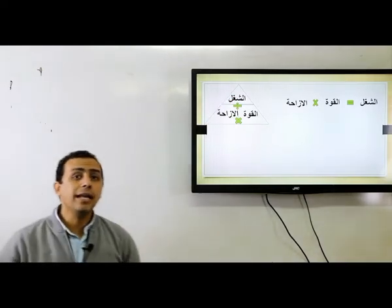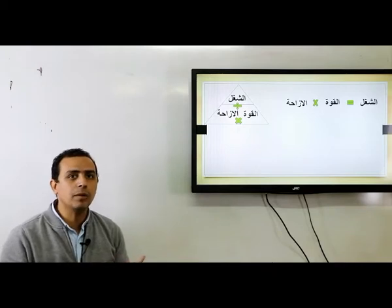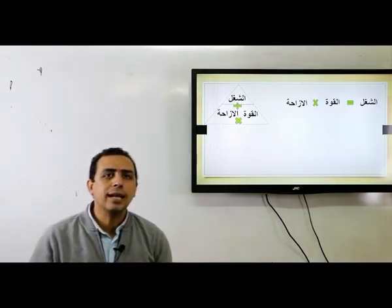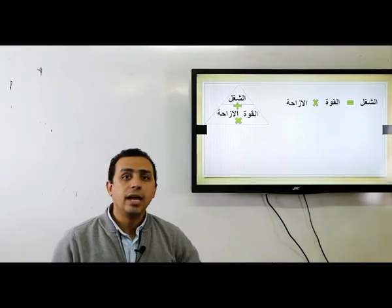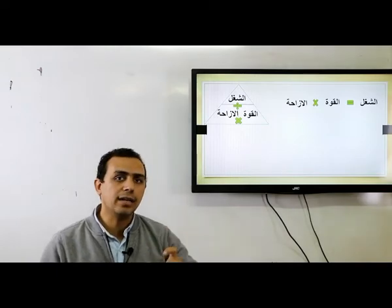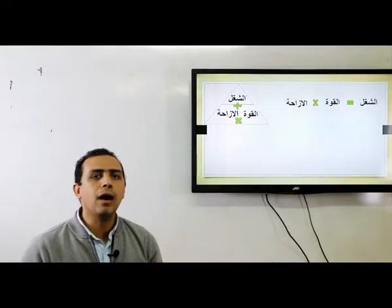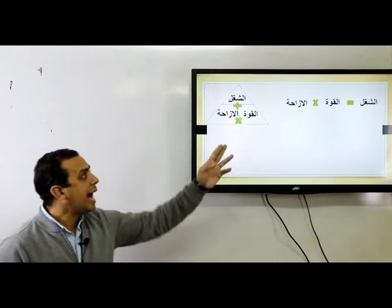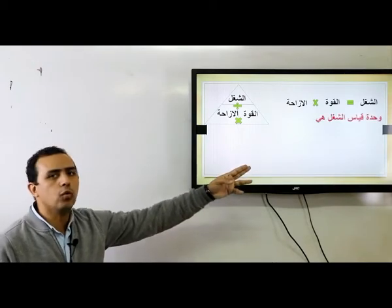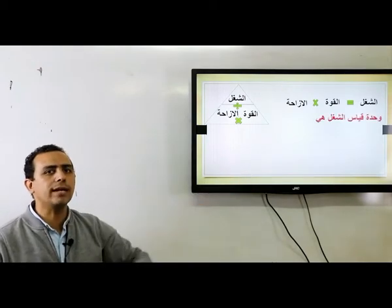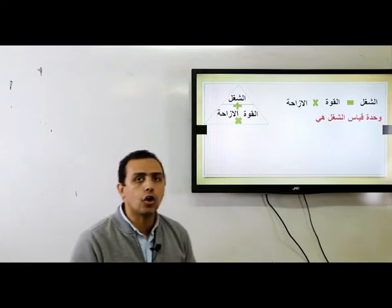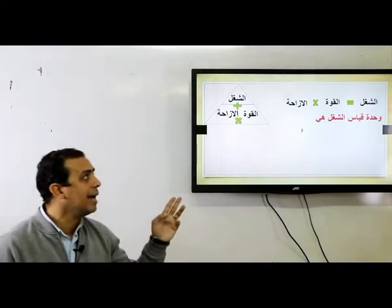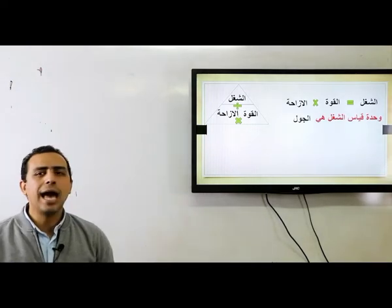لما بنحسب أي كمية فيزيائية لازم نحط وحدة قياس — الحاجة اللي بتتكتب جنب الرقم دي اسمها وحدة قياس. كل حاجة من غير وحدة قياس ناقصة. وحدة قياس الشغل حاجة جديدة أول مرة تسمعها — اسمها الجول.